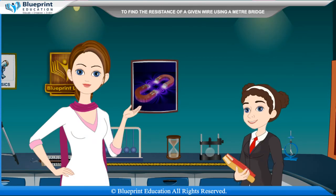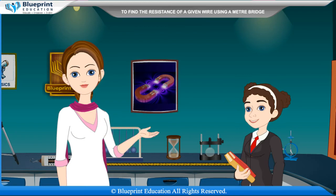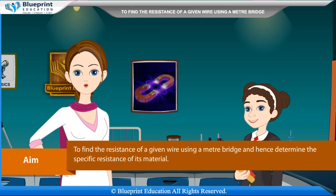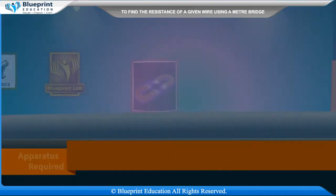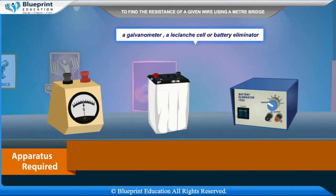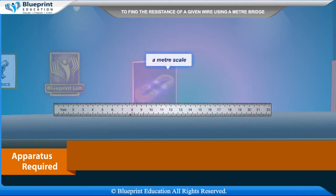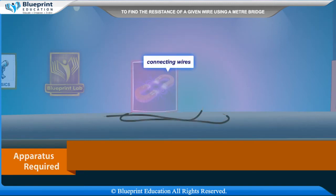Let's do an experiment to find the resistance of a given wire using a meter bridge and hence determine the specific resistance of its material. Apparatus required are: a meter bridge, a resistance box, a galvanometer, a Leclanche cell or battery eliminator, a jockey, a one-way key, a screw gauge, a meter scale, a wire whose resistance is to be determined, and connecting wires.